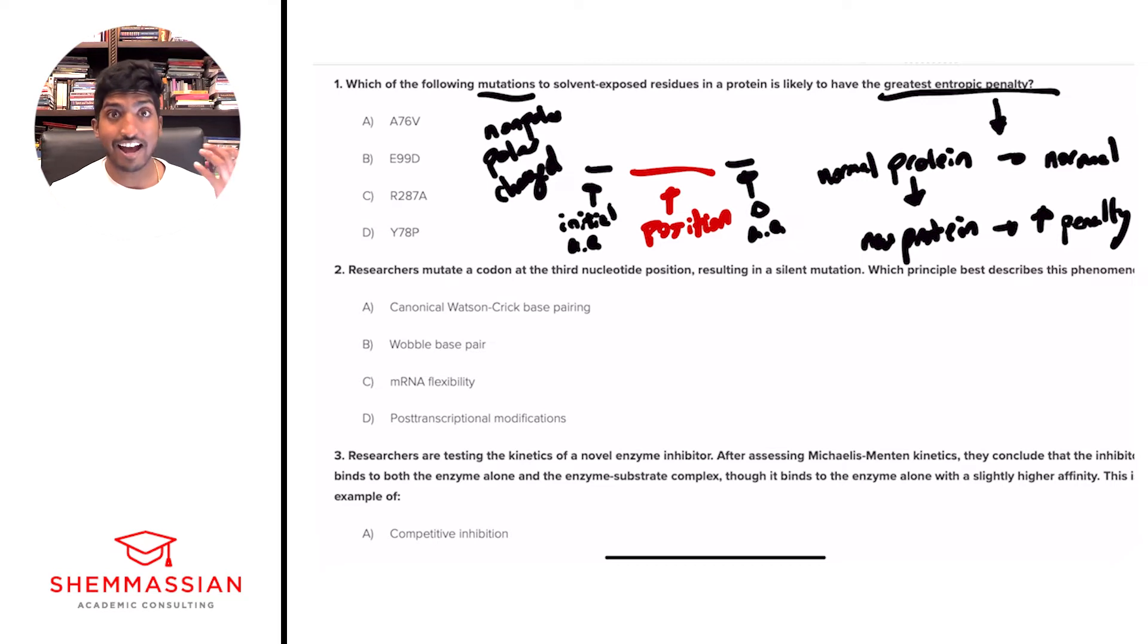And so in this case, we have alanine and valine, both of which are nonpolar amino acids. So if they're both nonpolar, that means the change is not going to be that great because they're in the same category. So we can eliminate A. First, B, E99D, right? What is E? E is glutamic acid, and what is D? Aspartic acid. So with this, what do we know? These are both negatively charged amino acids, right? So they fall into the same category yet again. So we can eliminate B because there's no crazy change happening.